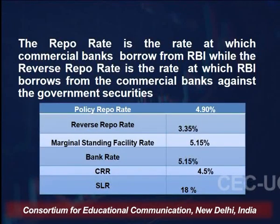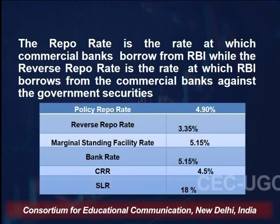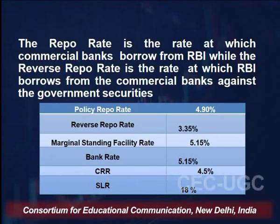Looking at the present rates in the economy: the reverse repo rate is 3.35%, the marginal standing facility rate is 5.15%, the bank rate is 5.15%, the CRR is 4.5%, and the SLR is 18%. The marginal standing facility is a facility under which scheduled commercial banks can borrow additional overnight money from the Reserve Bank by dipping into their SLR portfolio up to a limit at a penal rate of interest, providing a safety valve against unanticipated liquidity shocks. The LAF system consists of overnight as well as term repo auctions, with the Reserve Bank progressively increasing the proportion of liquidity injected under fine-tuning variable rate repo auctions.